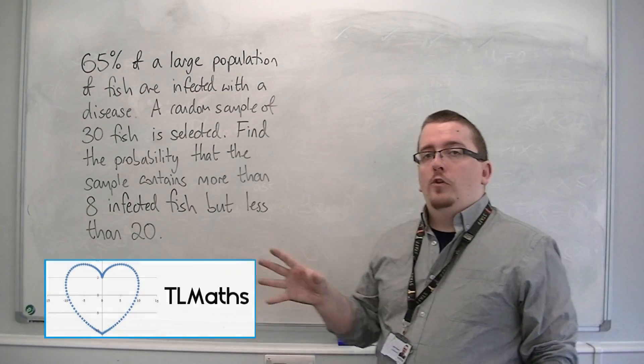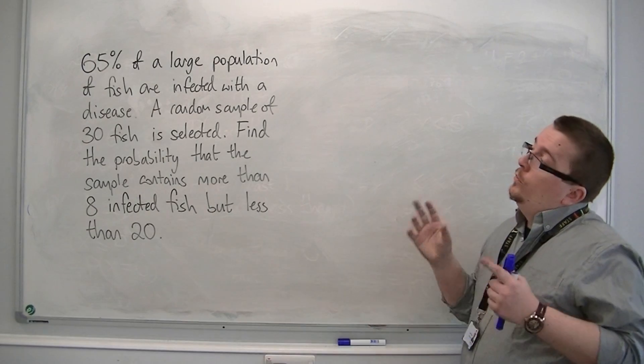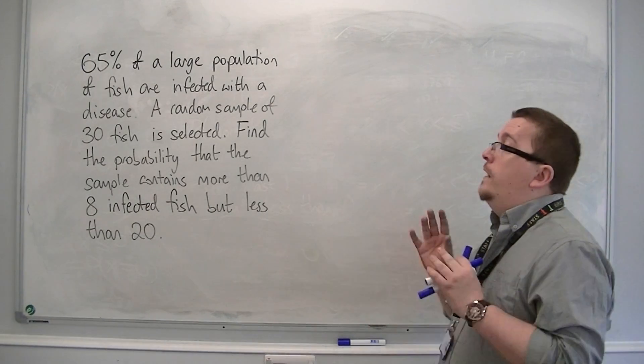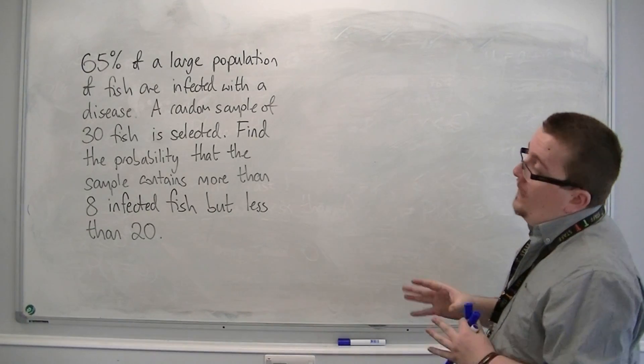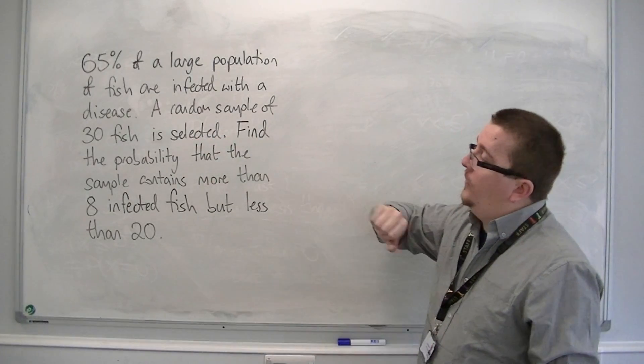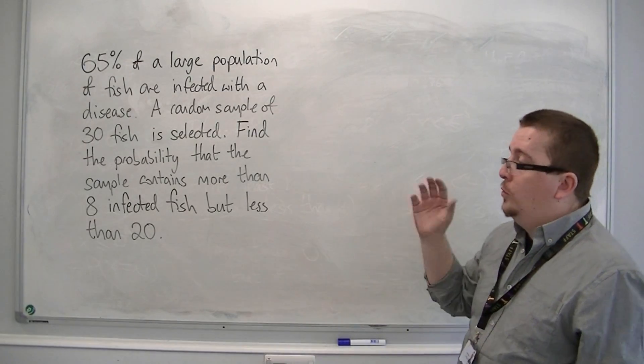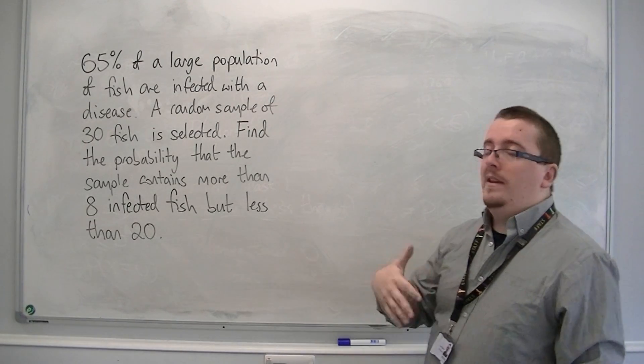So here is a problem involving cumulative probability with the binomial distribution. We've got 65% of a large population of fish are infected with a disease. A random sample of 30 fish is selected. Find the probability that the sample contains more than 8 infected fish, but less than 20.